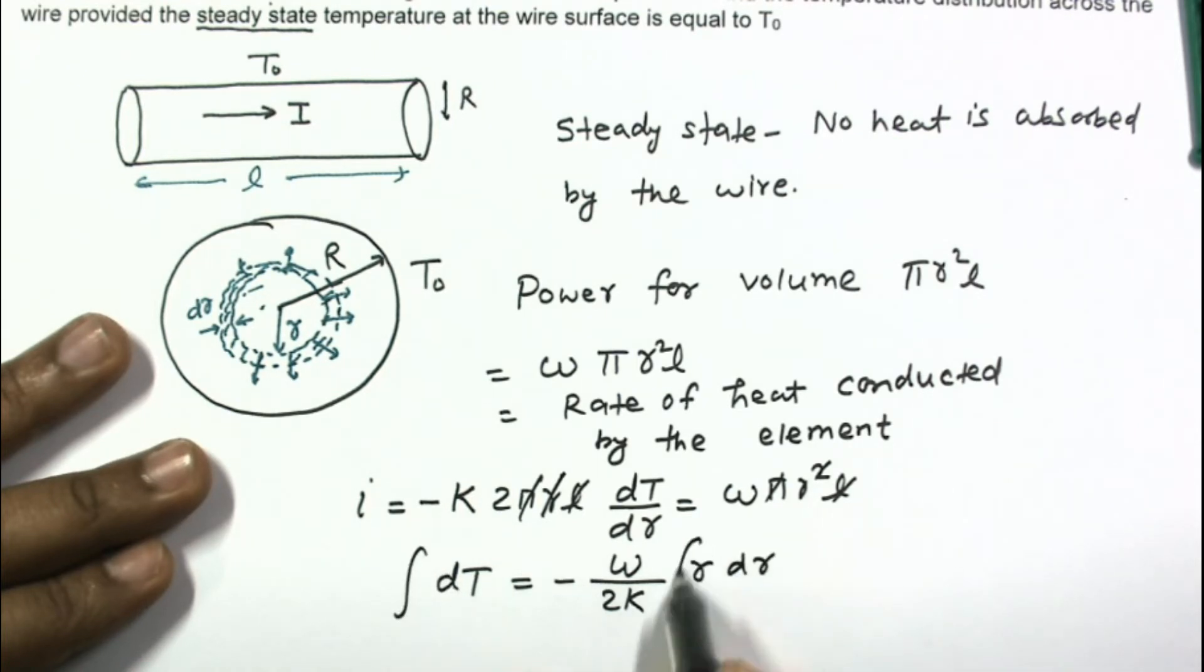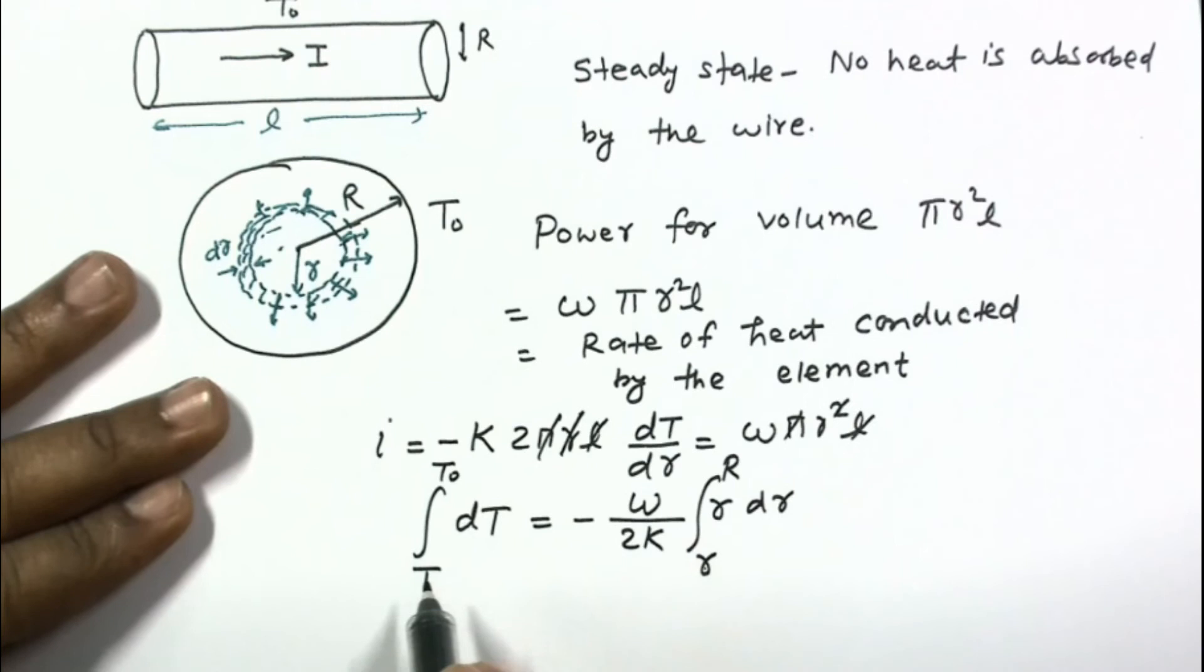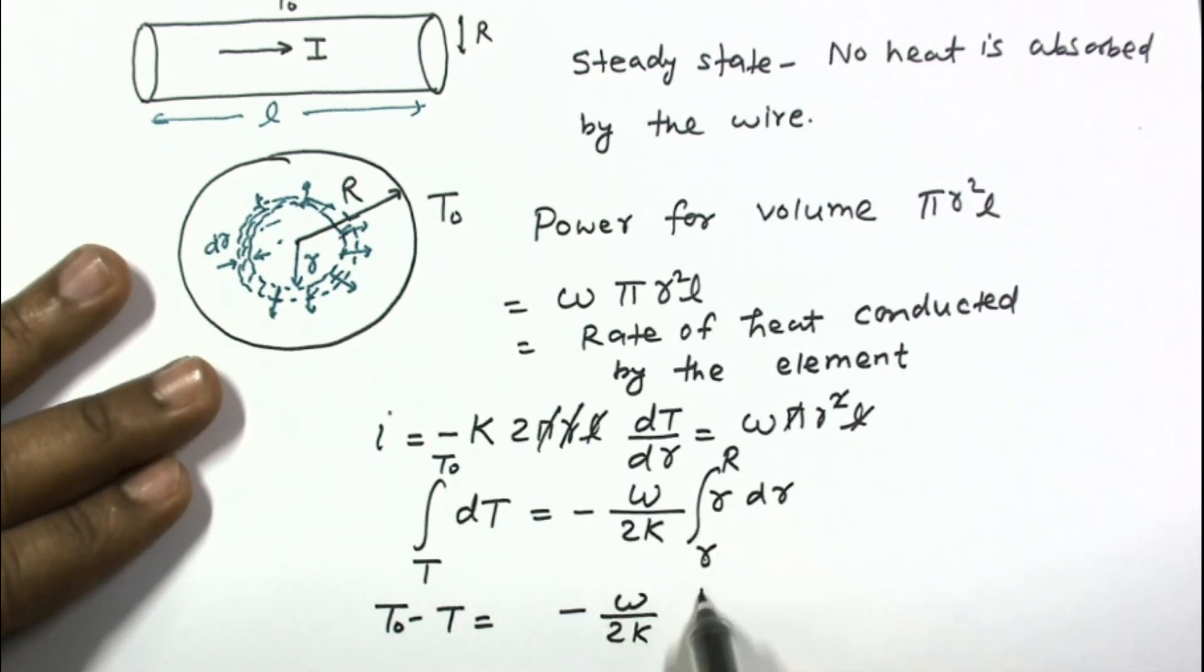Integrate this equation. I am integrating this equation from r to capital R. At r equals r, let temperature be T. At r equals R, temperature is given as T₀. So the integration will become T₀ - T. And this will become W/2K times (R² - r²)/2.